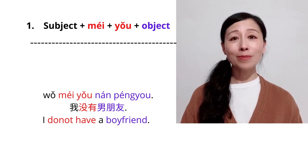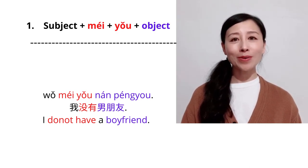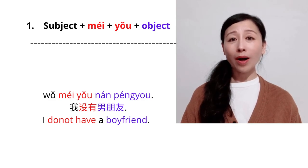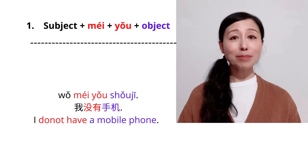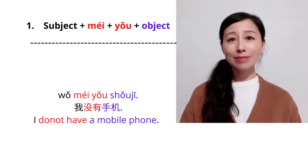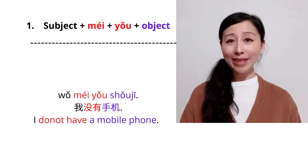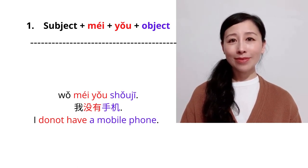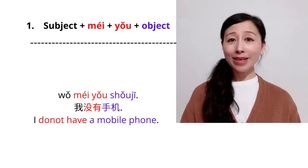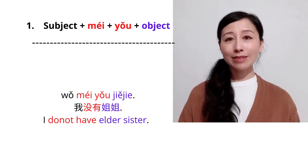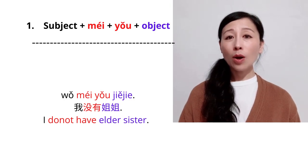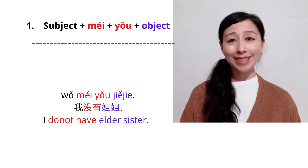For example, I don't have a boyfriend. Wǒ méiyǒu nánpéngyǒu. Another example, I don't have a mobile phone. Wǒ méiyǒu shǒujī. I don't have an elder sister. Wǒ méiyǒu jiějie.